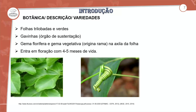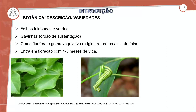A planta entra em floração com quatro a cinco meses de vida. Após o processo de plantio definitivo, após quatro a cinco meses, ela já começa a entrar no ciclo reprodutivo. A característica da morfologia trilobada das folhas é muito importante ressaltar, pois favorece também o processo de cultivo.